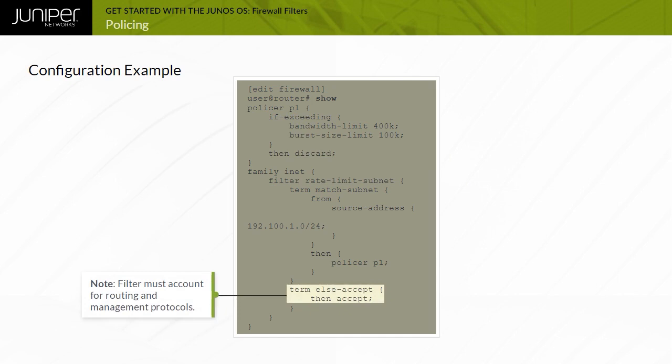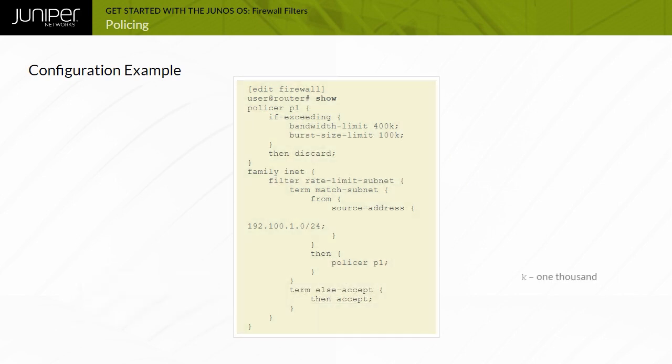If the traffic does not exceed the specified limits, the system accepts it. You can use the K, M, and G abbreviations to indicate 1,000, 1 million, and 1 billion bytes or bits, respectively.